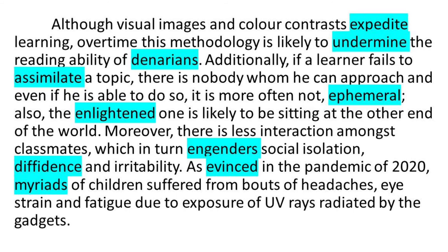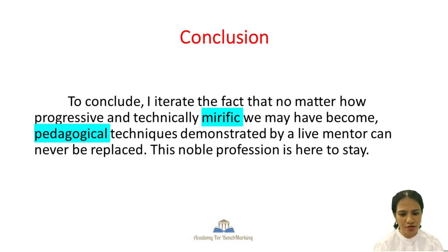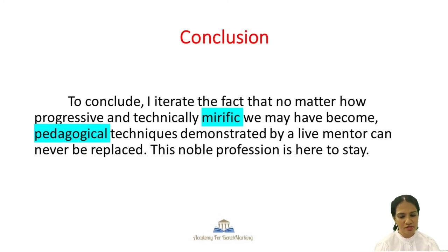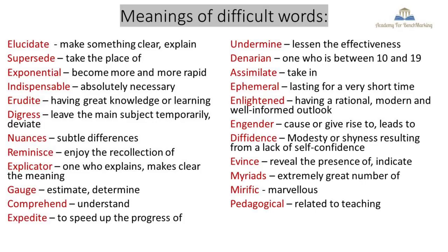You have now written the first, second, and third paragraphs, and finally the conclusion. The conclusion is a summation of what you have mentioned — you're not going to mention anything new. Here I've stated: 'To conclude, I aver the fact that no matter how progressive and technically mirific we may have become, pedagogical techniques demonstrated by a live mentor can never be replaced. This noble profession is here to stay.' — Mirific means amazing; pedagogical relates to teaching methodology. Here I have written all the meanings of the difficult words used — you can note them down and try using them in daily language.